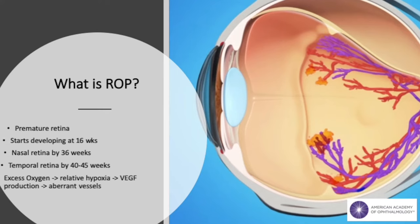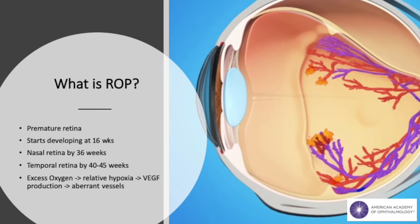But first, what is ROP? The best place to start is with the name: retinopathy of prematurity. At the most basic level, this is a problem of retinal development that can occur in premature infants.